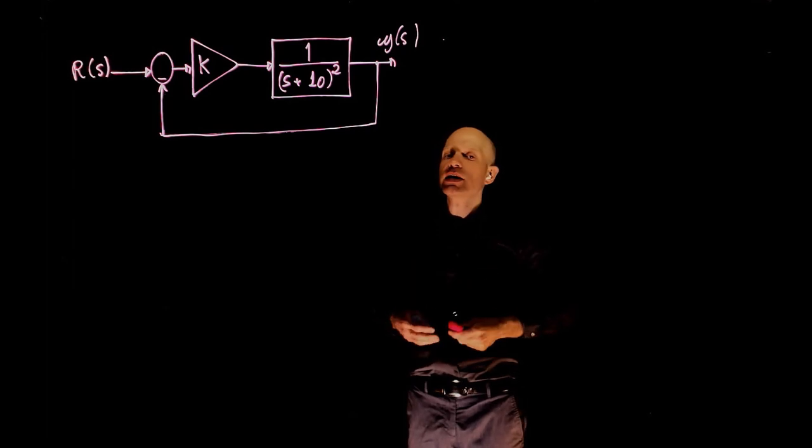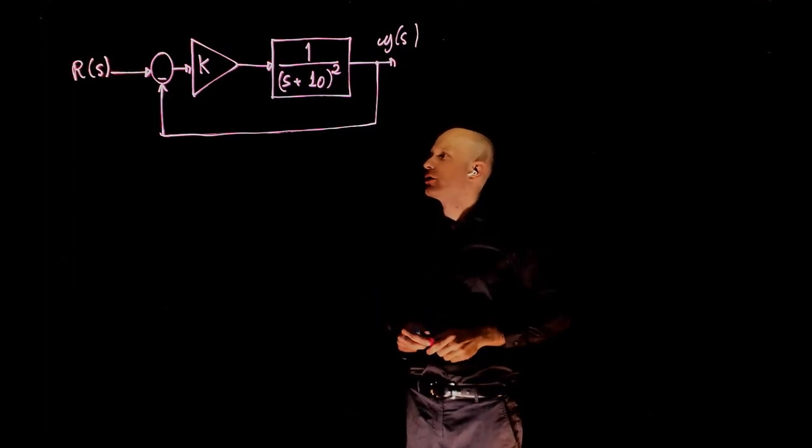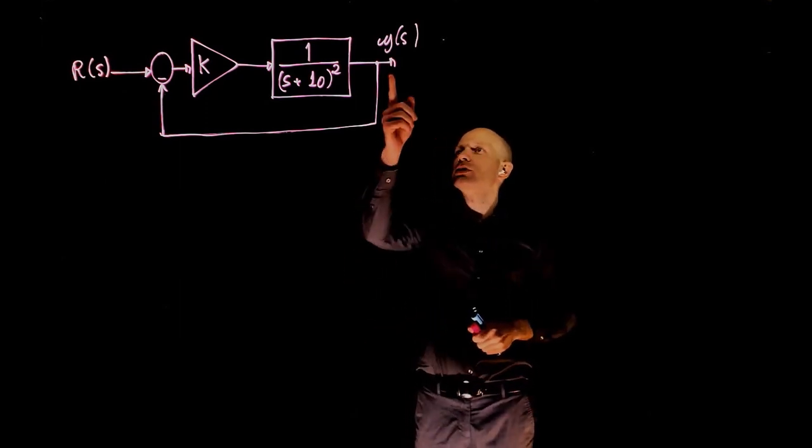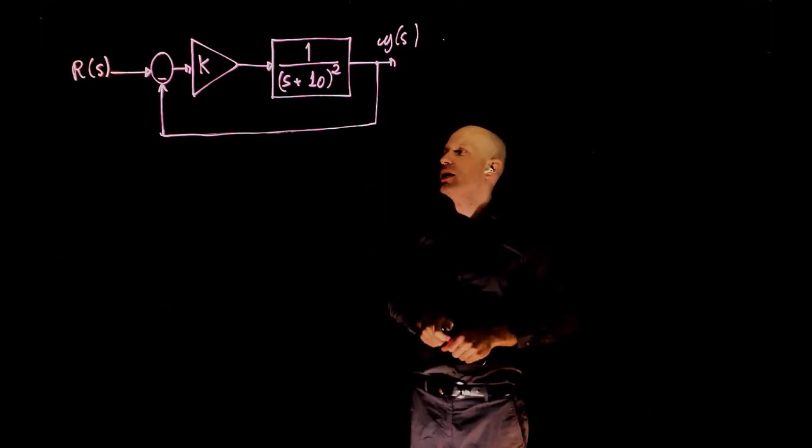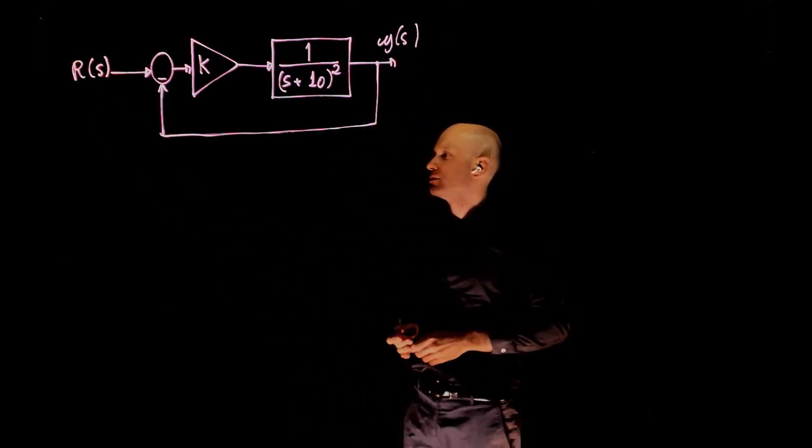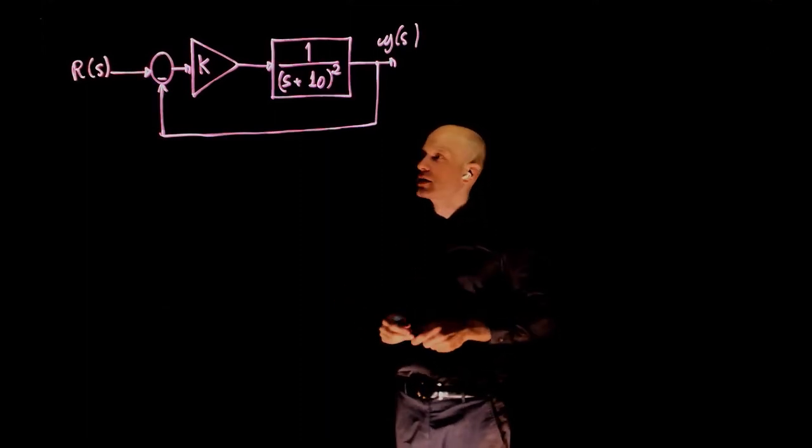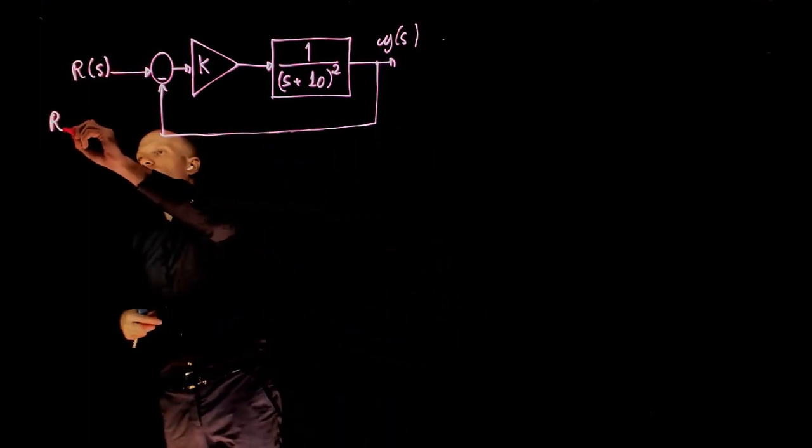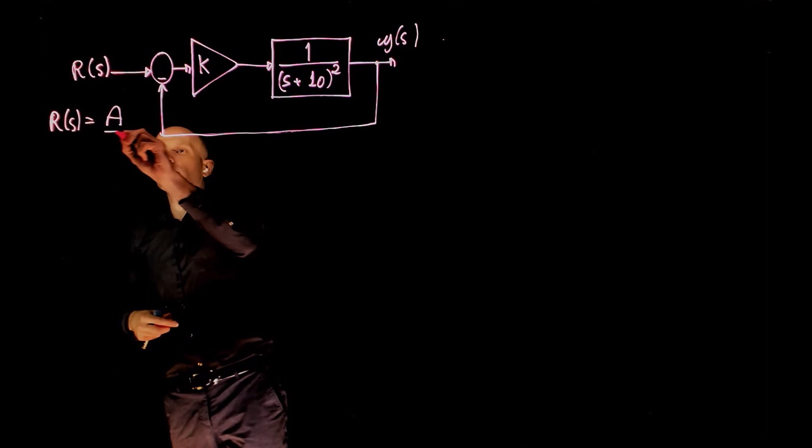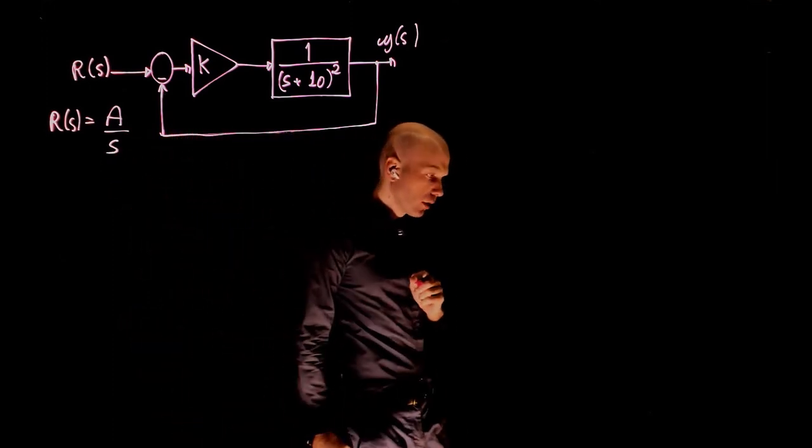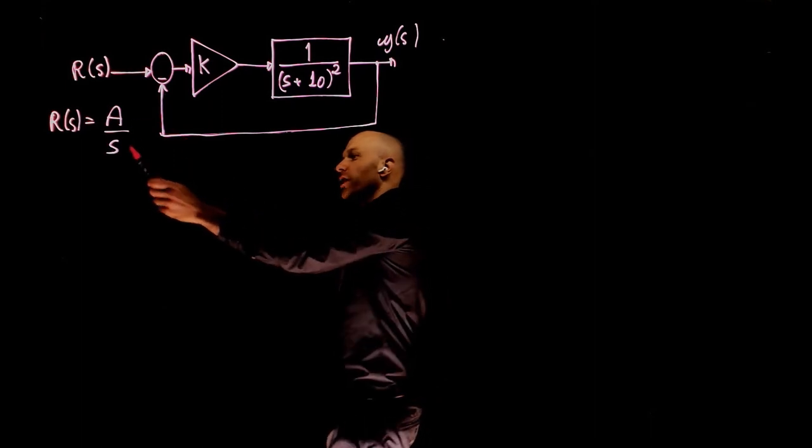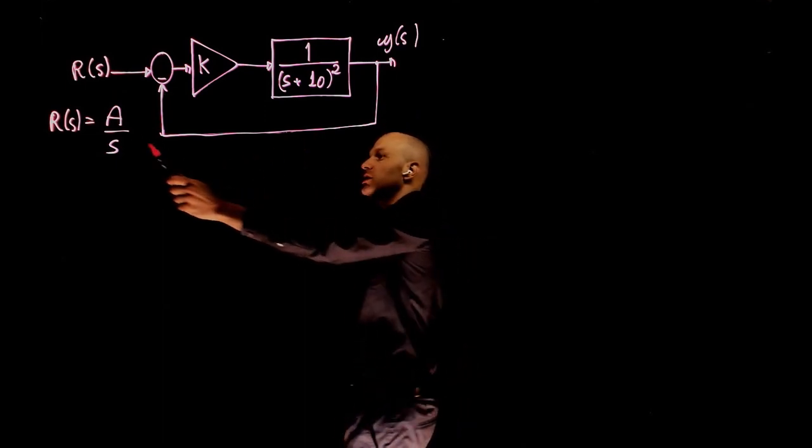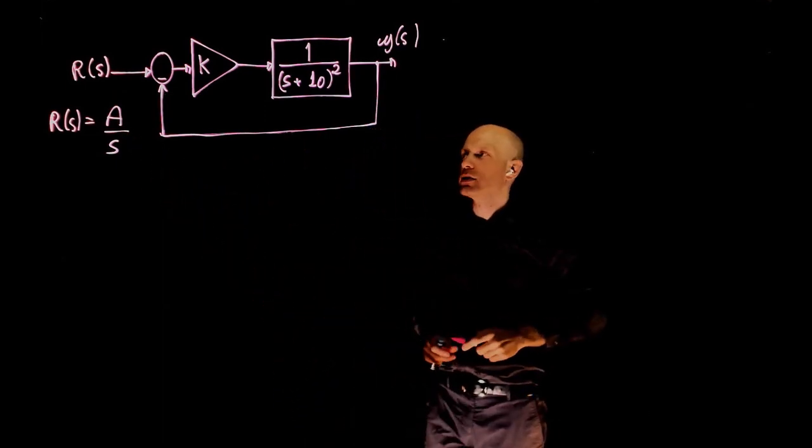We are interested in the steady state error for a step command r of s. The steady state error, in other words, is the final position that the robot reaches, the final value of y of s, when a step is given to r of s. We know that the magnitude of that step is a, so r of s is a over s. If you now give a magnitude a over s as the input here, what is the final value that y reaches, and how close is that to a? That difference is the steady state error.